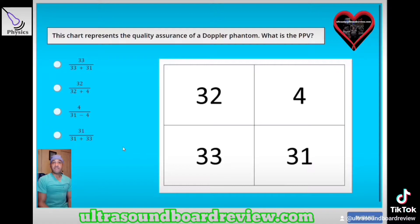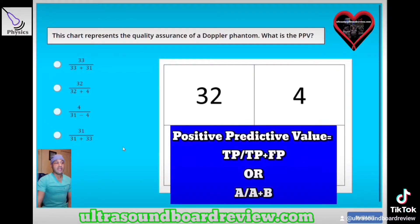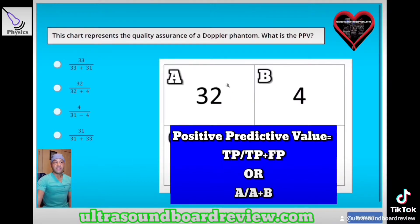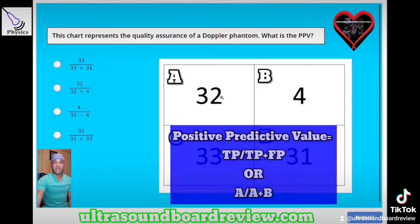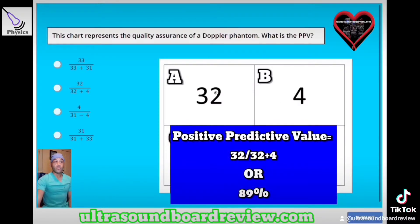Your positive predictive value equation is all your true positives divided by the sum of your true positives plus your false positives, or A divided by the sum of A plus B. So the answer to this question is 32 divided by the sum of 32 plus 4. So this is the correct answer.